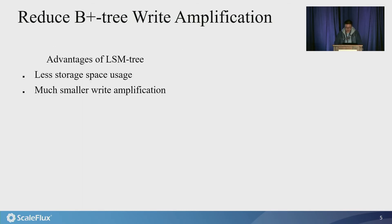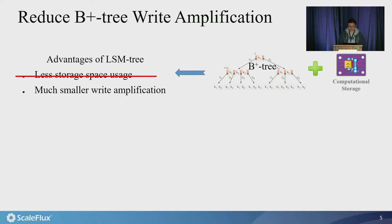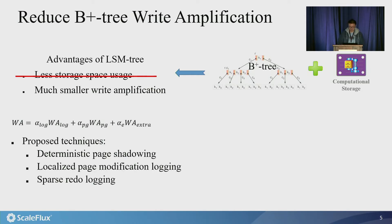So comparing with B+ tree, LSM tree has larger storage space usage and smaller write amplification. But if we use B+ tree on storage hardware with built-in transparent compression, we could easily eliminate the gap of storage space usage. And based on the equation, we propose three techniques to reduce the parameters and further reduce the write amplification.